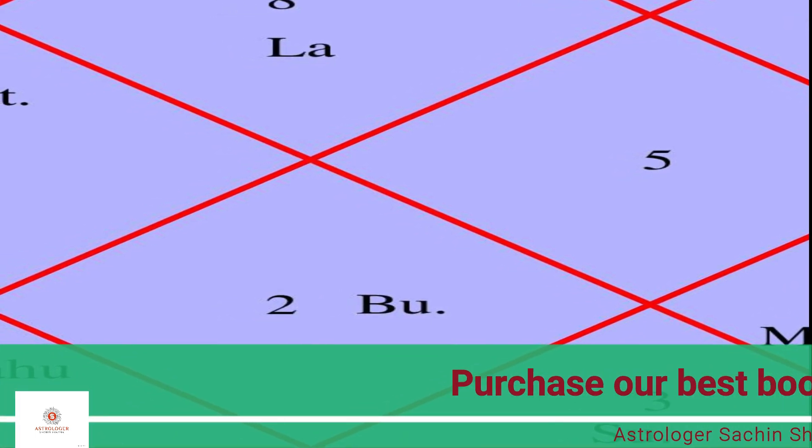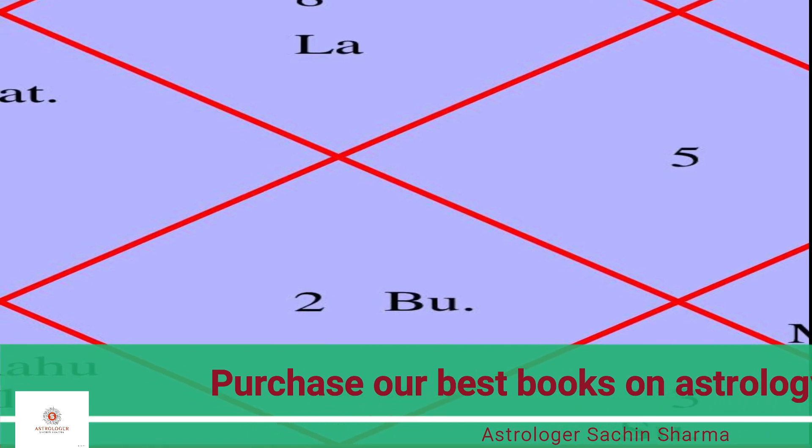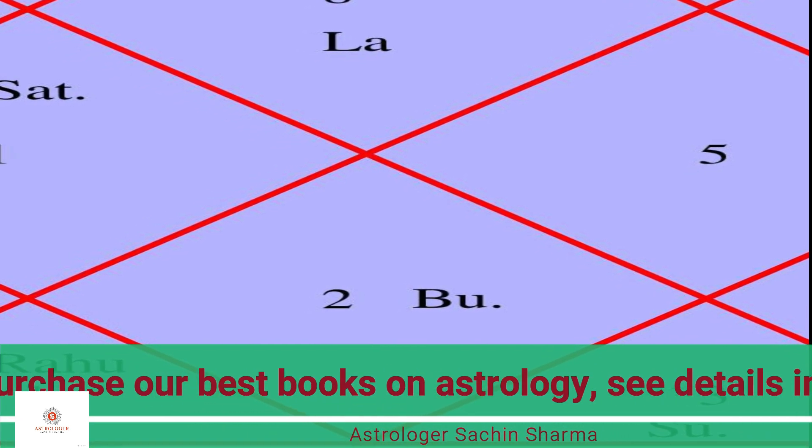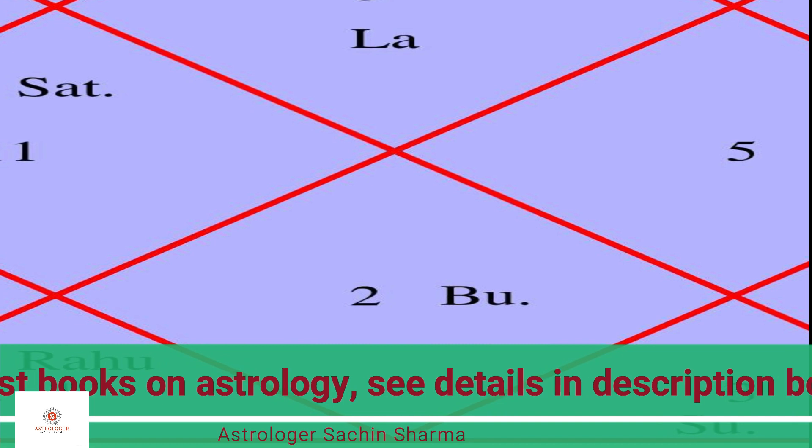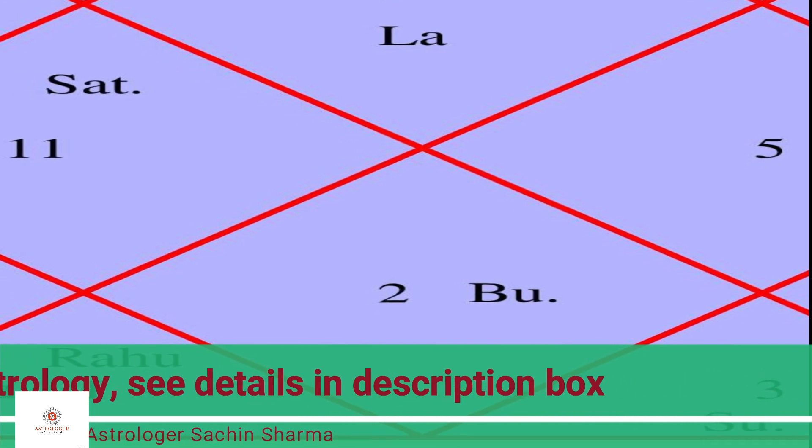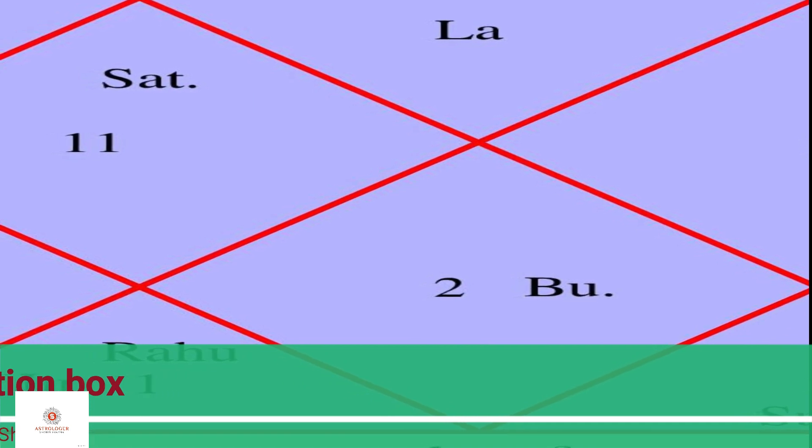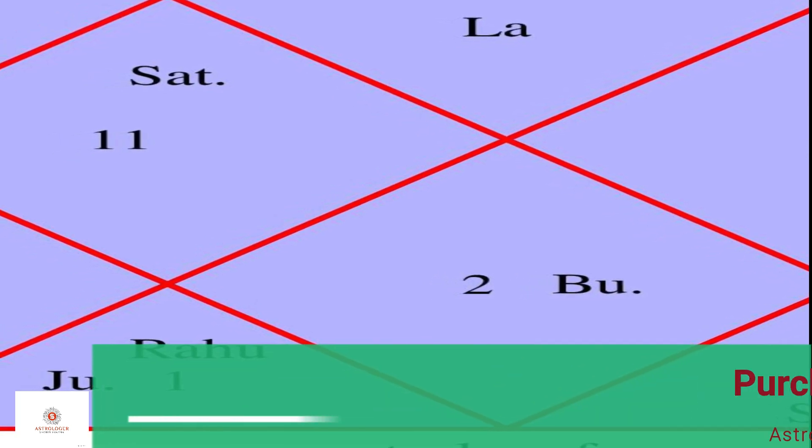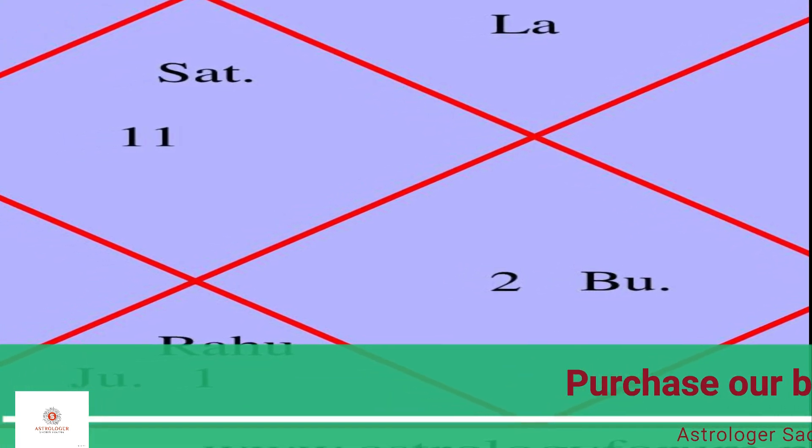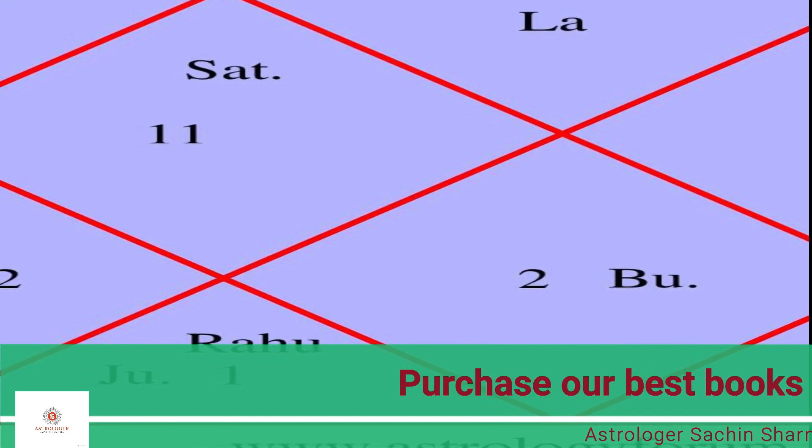This helps to balance the energies and reduce the negative impact of these planets. Keep a small square piece of silver in your pocket or wear a silver ring to strengthen the positive aspects of Jupiter. Avoid consuming alcohol, non-vegetarian food, and other intoxicants, as these can aggravate the negative influences of Rahu and Jupiter.